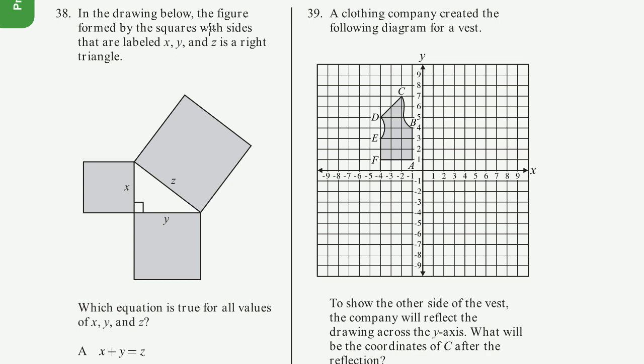Problem 38. In the drawing below, the figure formed by the squares with sides that are labeled x, y, and z is a right triangle. So they're saying this thing right here is a right triangle. And they ask us which equation is true for all values of x, y, and z.